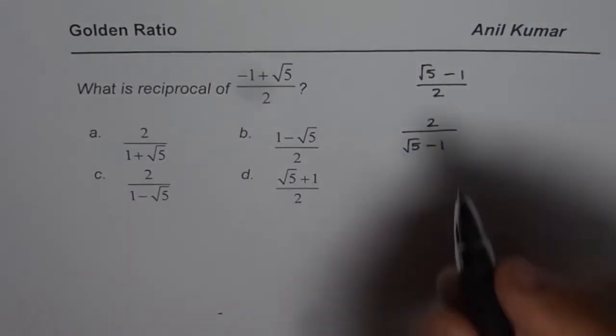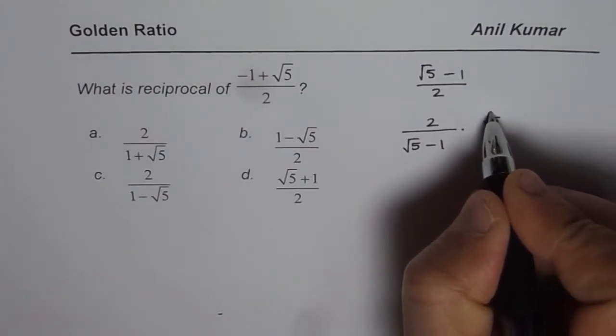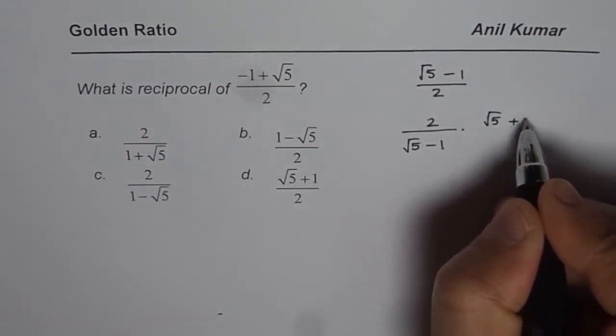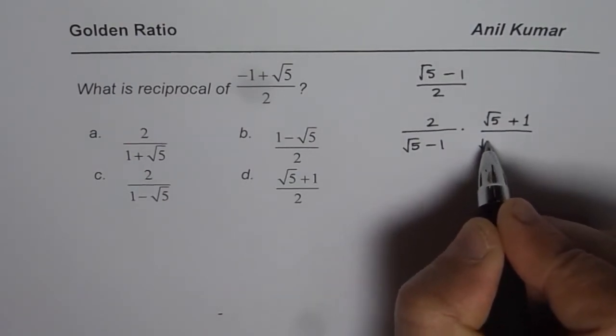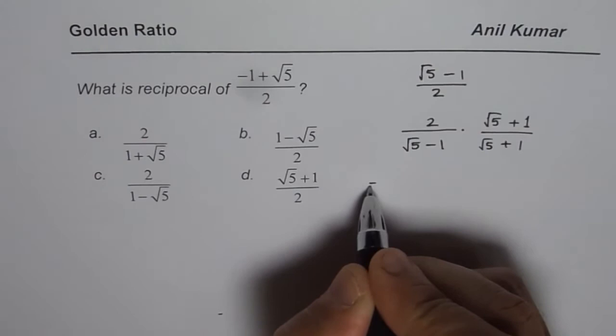So what should we do? We can actually rationalize this number. So if I rationalize, I have to multiply by √5 + 1, right? √5 + 1. When I do that, what do I get?